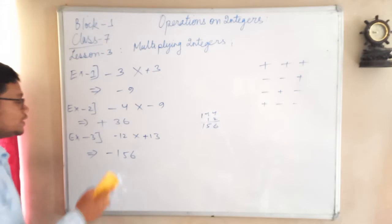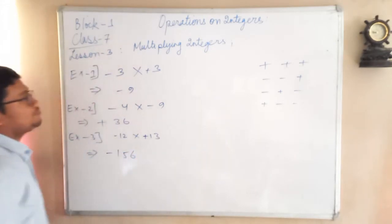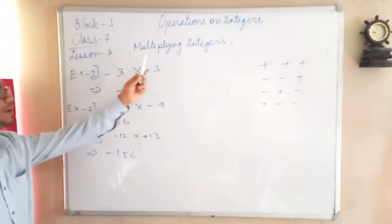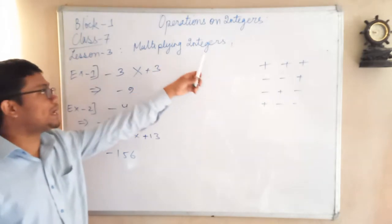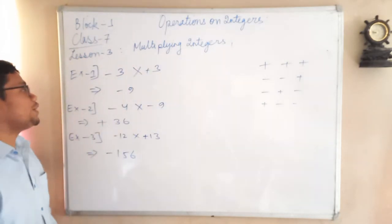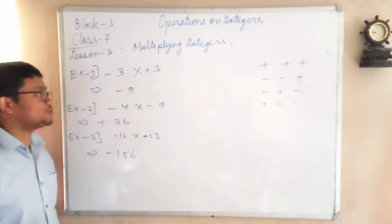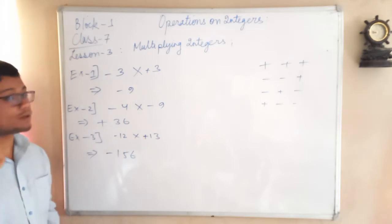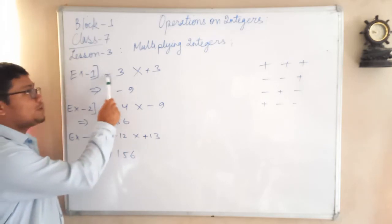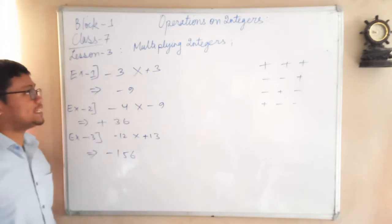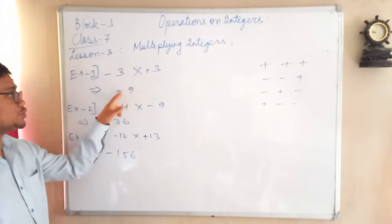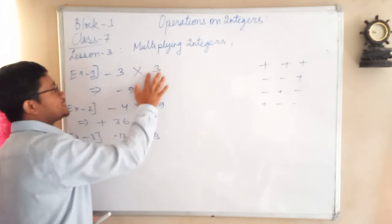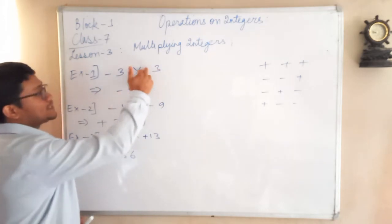You can apply the same concept with big numbers as well. What did we learn? How to multiply integers — it's very simple. Multiply the numbers the way you normally do, but also keep in mind that you have to multiply the signs as well. Minus times plus gives minus.